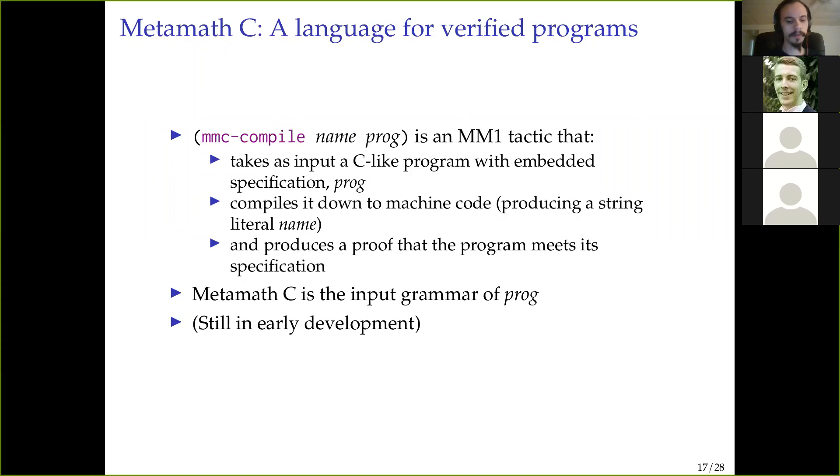So, as I said, MM1 has a Turing complete programming language inside it. So within that, there is a function called MMC compile that you give it a name, and you give it some program text. So it takes a C-like program with an embedded specification, and it compiles it down to machine code and produces a proof that the program meets its specification. And MetaMath C describes the input grammar of this program here. And I should mention that this is still in early development. But the plans for this are quite well laid out.